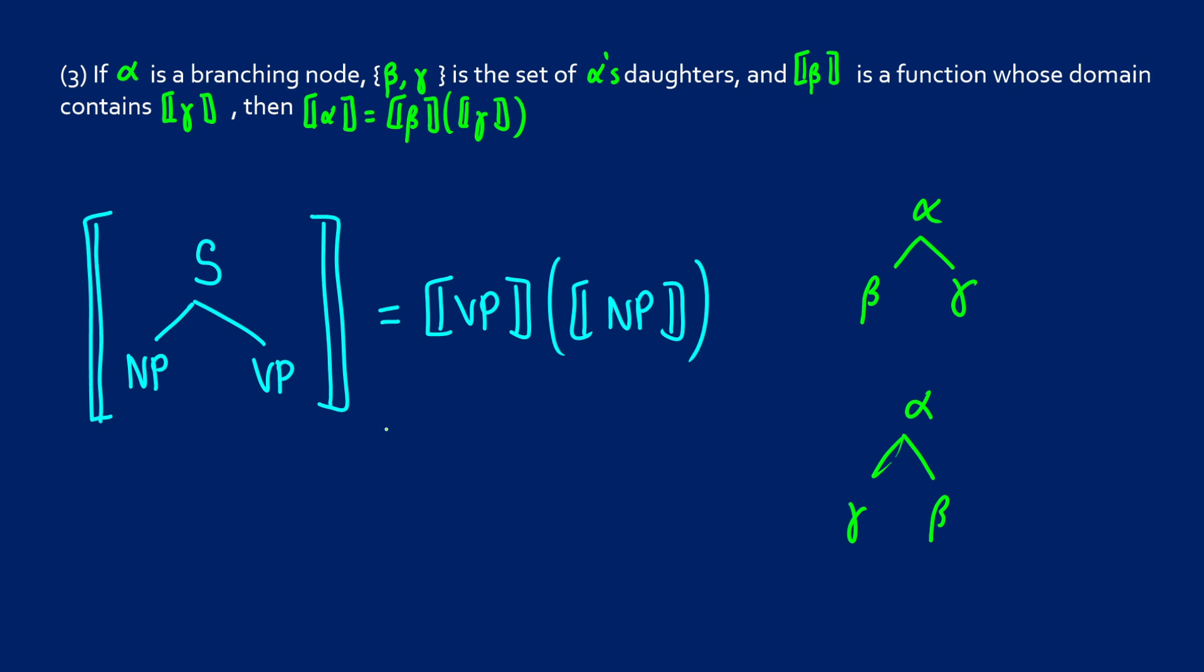And then we have beta is a function whose domain contains gamma. So basically you can think about this as a verb phrase is the type e-t. It's lambda x, it's searching for something that's verbing. A noun phrase is a type e. It is being put in to the verb phrase. So in terms of the function here from entities to truth value, this noun phrase is in the domain of the verb phrase.